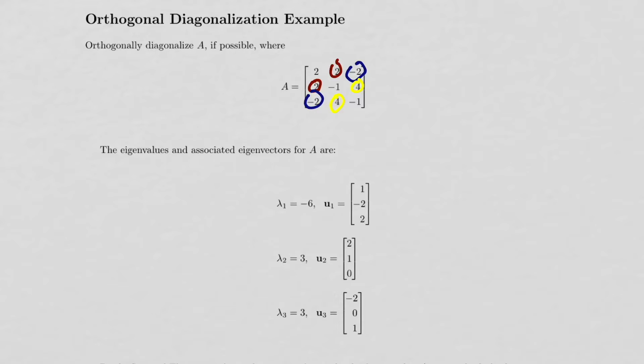This matrix A is symmetric and therefore diagonalizable. To orthogonally diagonalize A, we need to diagonalize it and then do an extra step of normalizing the eigenvectors.